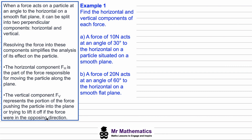Throughout this video we're going to work through three or four examples to demonstrate this idea. In example one, we've been asked to find the horizontal and vertical components of each force. We're told that a force of 10 newtons acts at an angle of 30 degrees to the horizontal on a particle situated on a smooth plane.